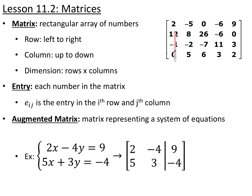Each number in the matrix we call an entry, and we can label each entry by its row and column. So if we want the entry at position i,j, that would be the entry in the ith row and jth column. So if we said we wanted entry 2,3, that would be the entry in the second row third column — so it would be 26.